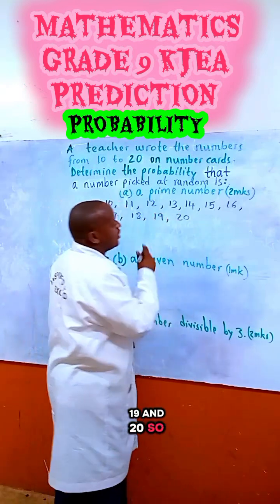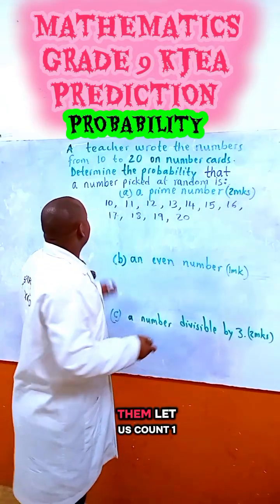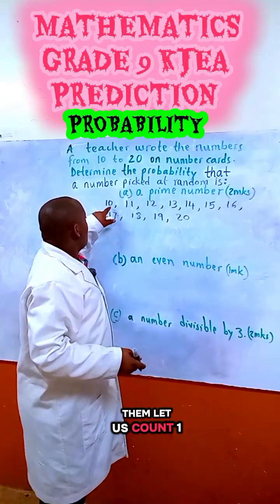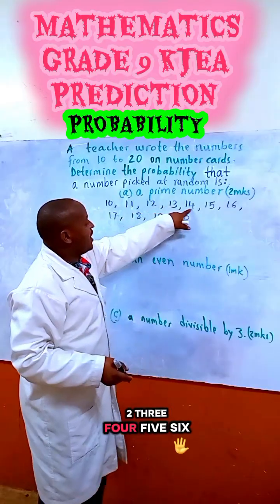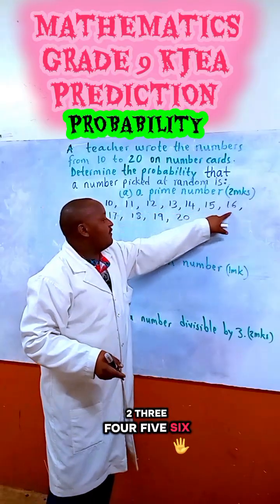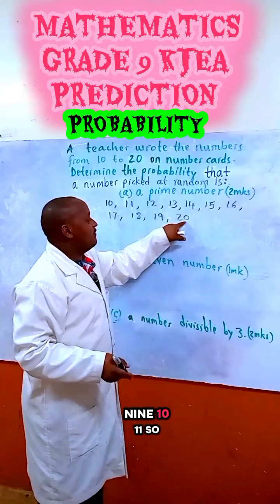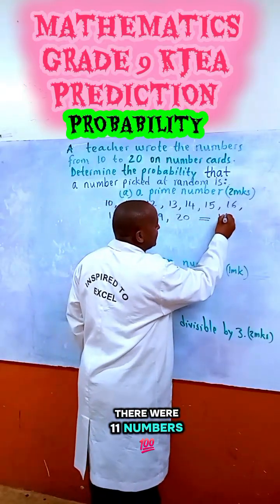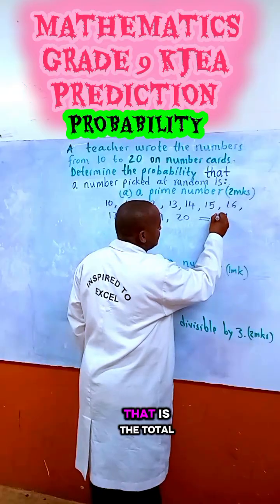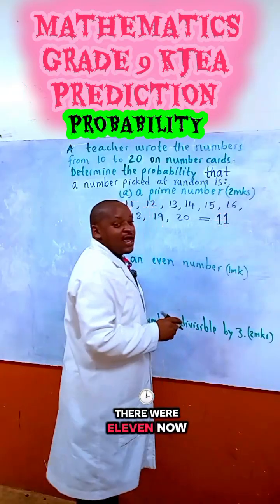So, these were the numbers. Let us count them: 1, 2, 3, 4, 5, 6, 7, 8, 9, 10, 11. So, they were 11 numbers in total.